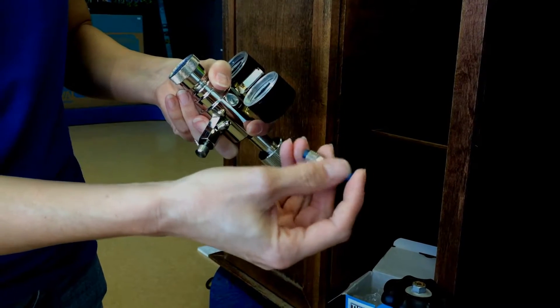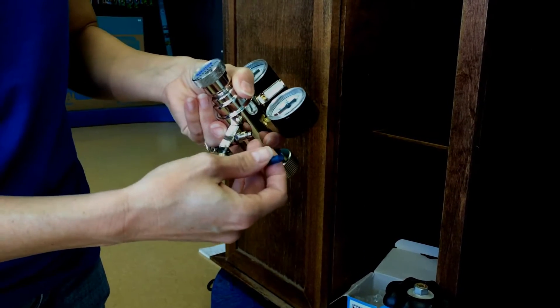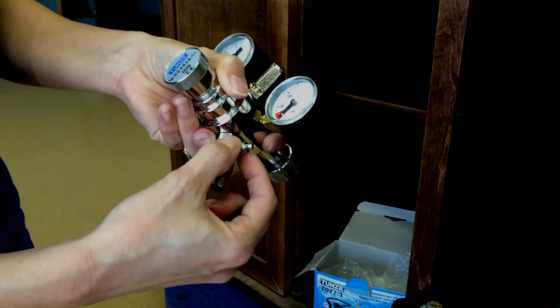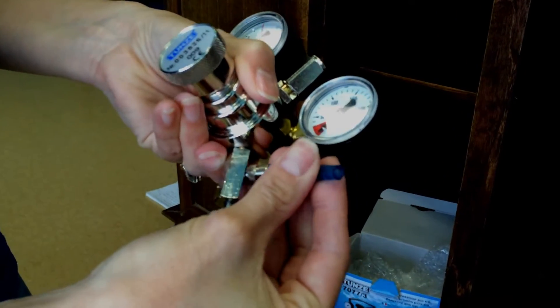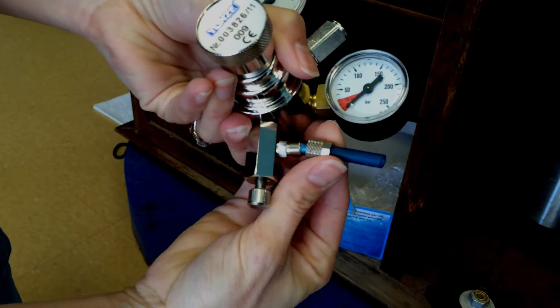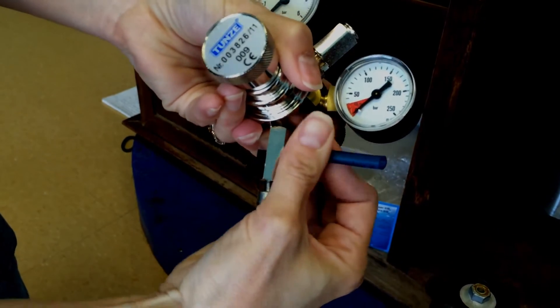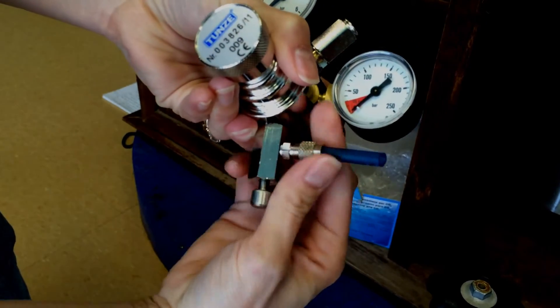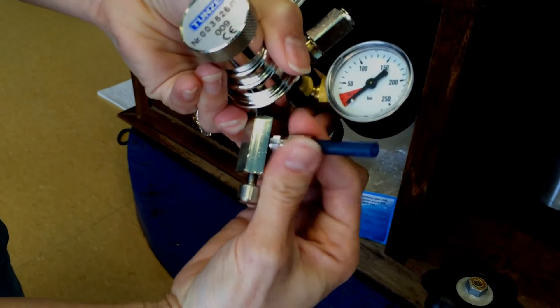You're going to put the tubing through the nut. This nut would normally come on the regulator. You're going to take that off, attach it, and screw it on, making sure you've got a nice sealed connection.